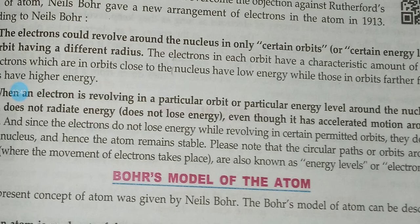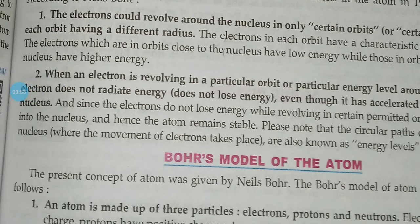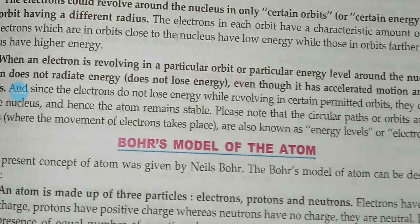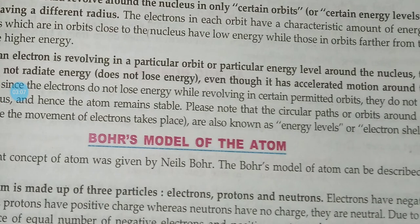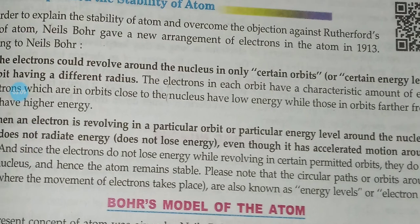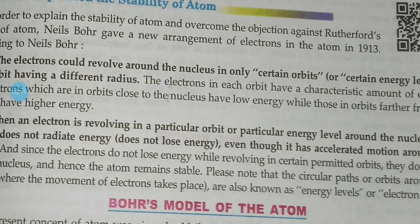Since electrons revolve in particular energy zones, they do not lose their energy, and hence there is no change in the speed of the electrons while revolving around the nucleus, and atoms remain stable.